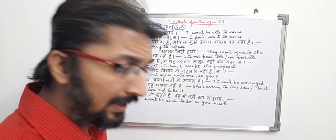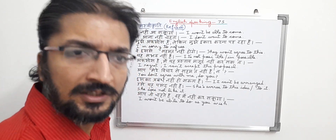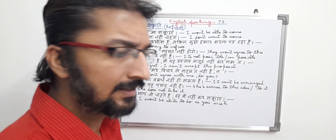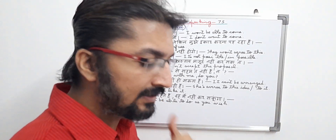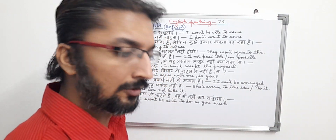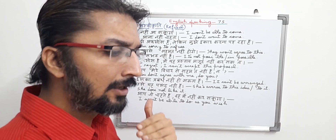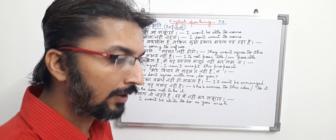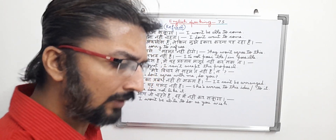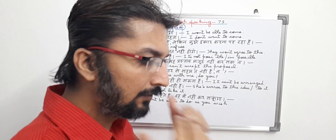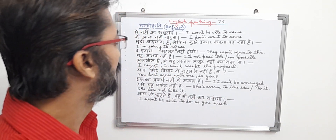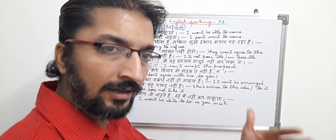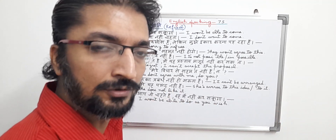Aswikrati means in English: refusal. Basically, aswikrati or refusal means that we directly refuse to do something — if we are not interested in doing something, we clearly refuse to do that thing. Refusal means clearly refusing to do anything, either going for an outing with friends, doing work for another person, or anything else. We clearly refuse if the work is not of our interest. I will read the sentences in Hindi and translate them into English side by side, so it will become easier for you to understand refusal type sentences.